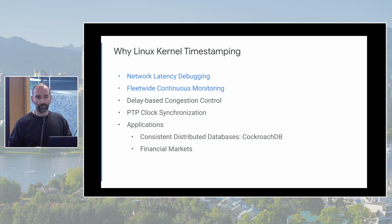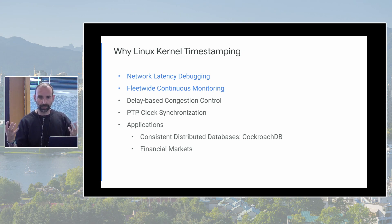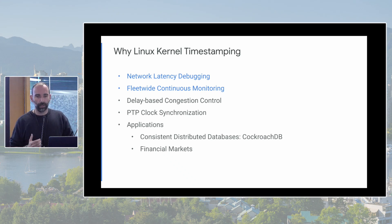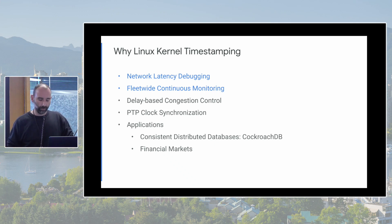PTP clock synchronization is the most classic use case of timestamps, but it's relatively low-rate since it's only control messages. Delay-based congestion control needs timestamps for potentially every packet of every flow. Applications also increasingly want precise timestamps — strongly consistent distributed databases use uncertainty windows to order events, and the smaller that window the more scalable the database. Financial markets similarly care about which bid arrived first.